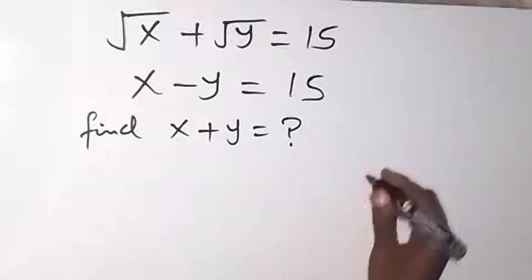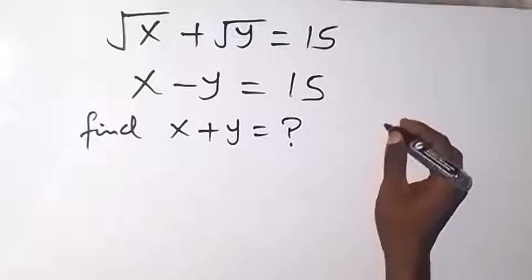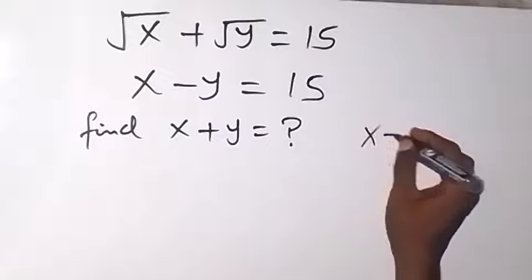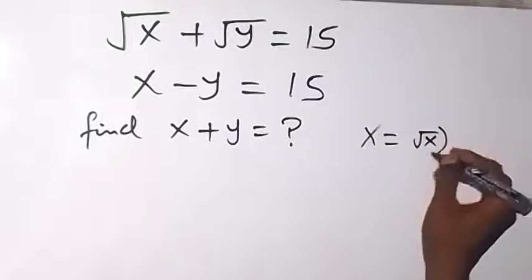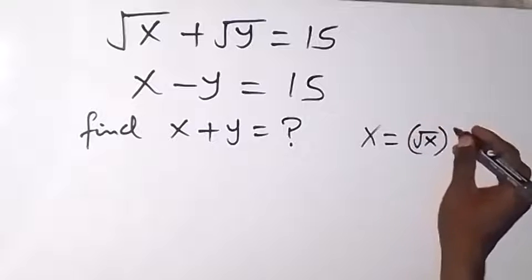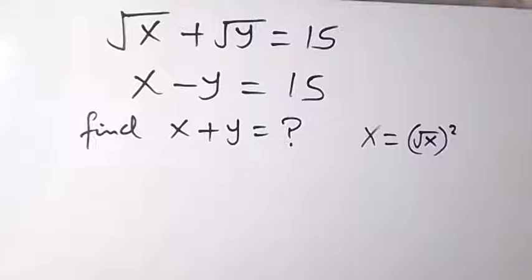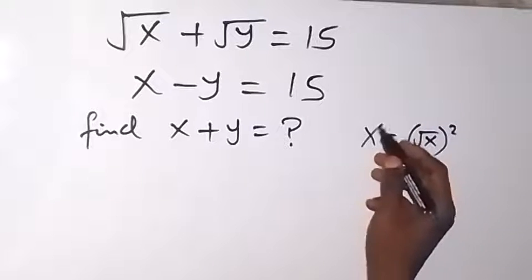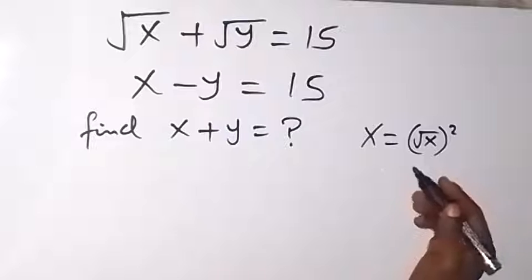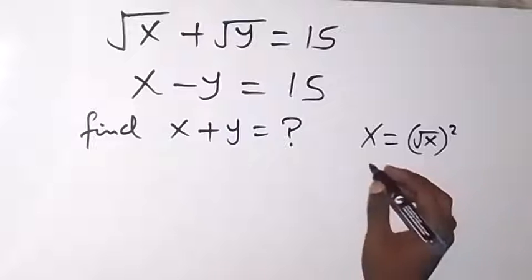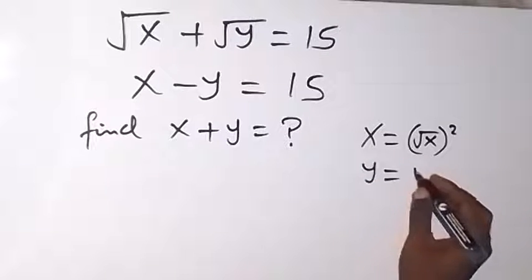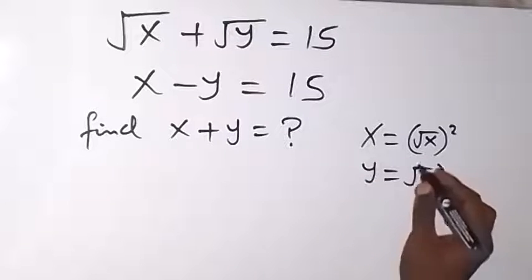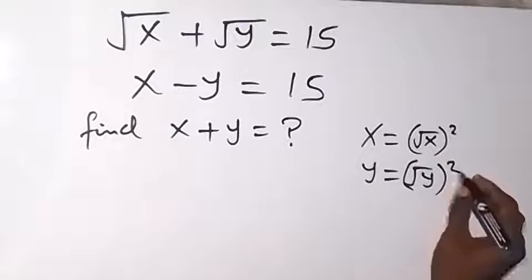From here, let's state that x can be equal to root x, then squared. So root x squared is the same thing as x, because we can take the square root. And also, y can also be written as root y squared.